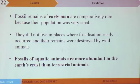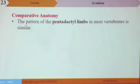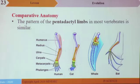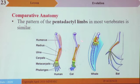Fossils of aquatic animals are more abundant in the earth's crust than terrestrial animals. The next evidence is comparative anatomy. The pentadactyl limb in most vertebrates is similar, showing descent from a common ancestor. Looking at the pentadactyl limb of a human, a cat, whale, and bat — organisms that have nothing in physical resemblance — the bone structure is the same in all of them, meaning all these mammals are descendants of a common ancestor.